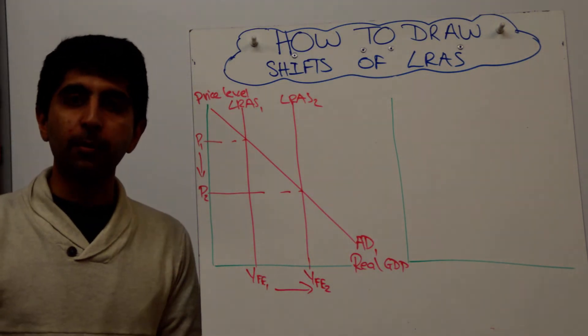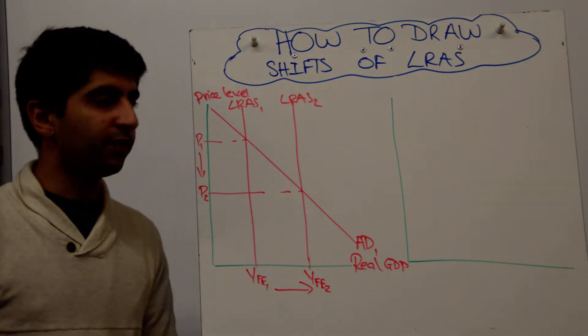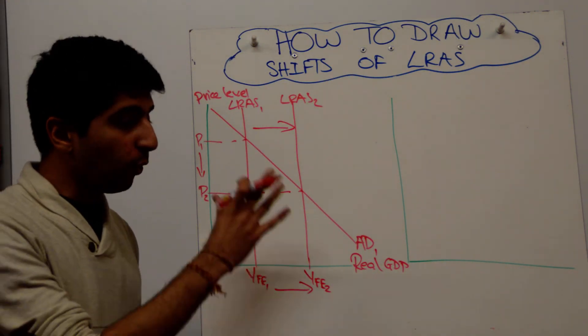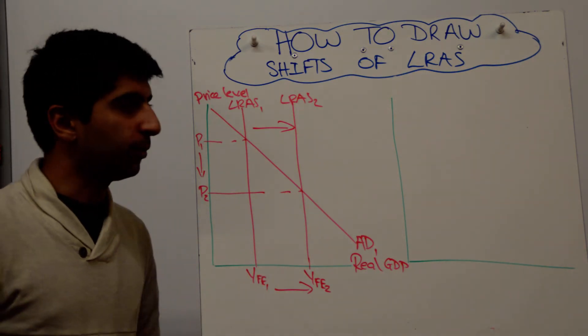That the full employment level of output has increased as a result of the shift to the right of LRAS. If you want to draw the arrow to show that, you can do. So that's all I'd recommend you doing in the classical model. Simple stuff.